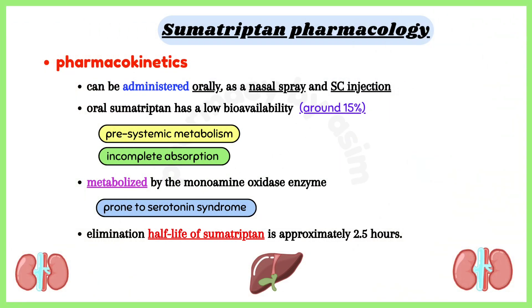Sumatriptan is metabolized by the monoamine oxidase enzyme, so patients are prone to serotonin syndrome when it is administered in combination with other serotonergic drugs.